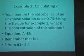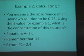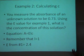Now it says you measure the absorbance of an unknown solution. We don't know what the concentration is, and the absorbance is 0.73. Using the E value from example one, what is the concentration of this solution? We have our same equation. Our path length is still one, and our E from number one, which we just did, is 2.4.